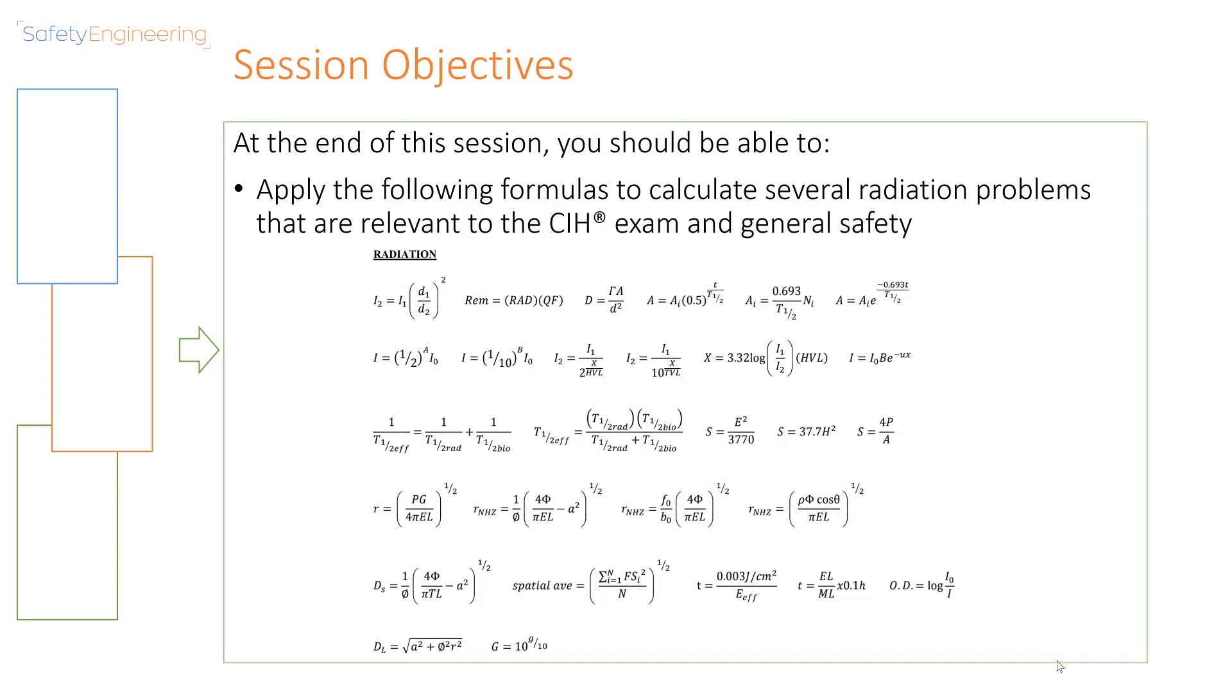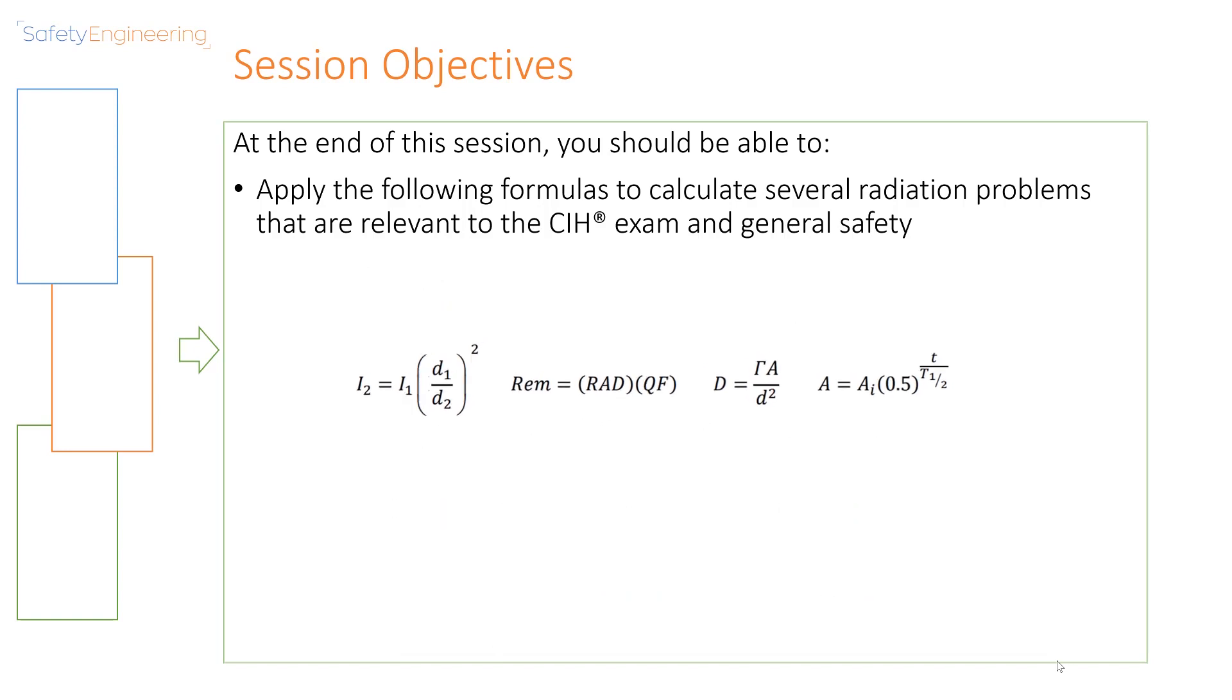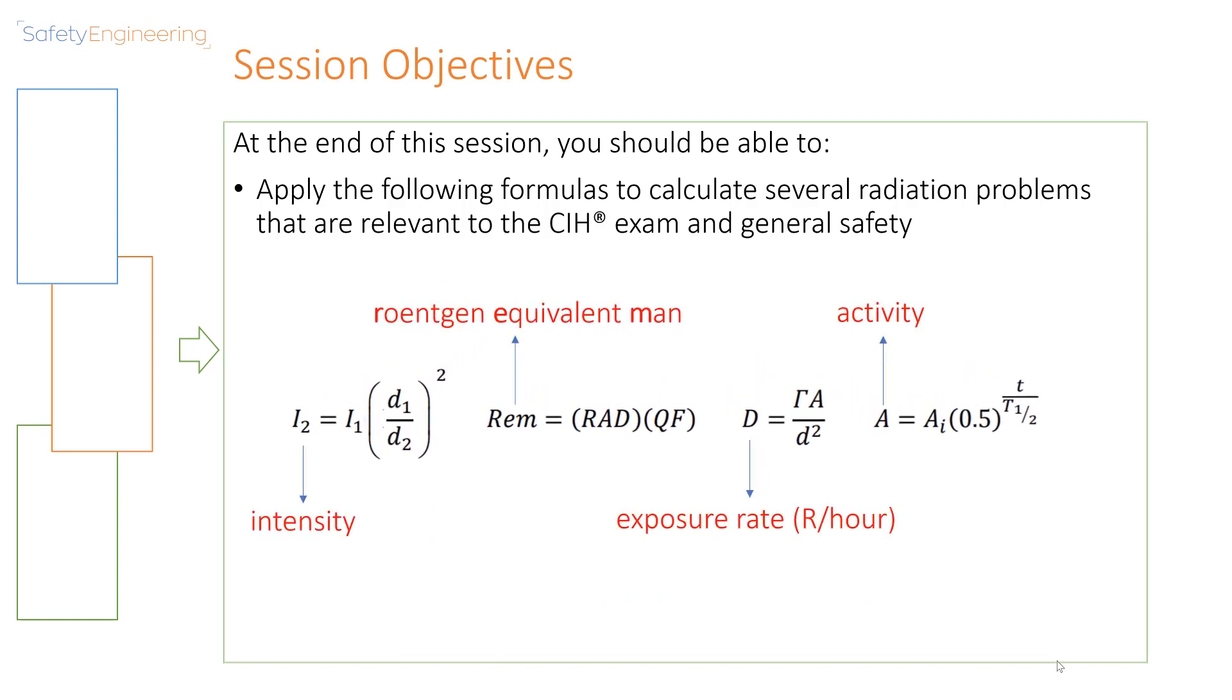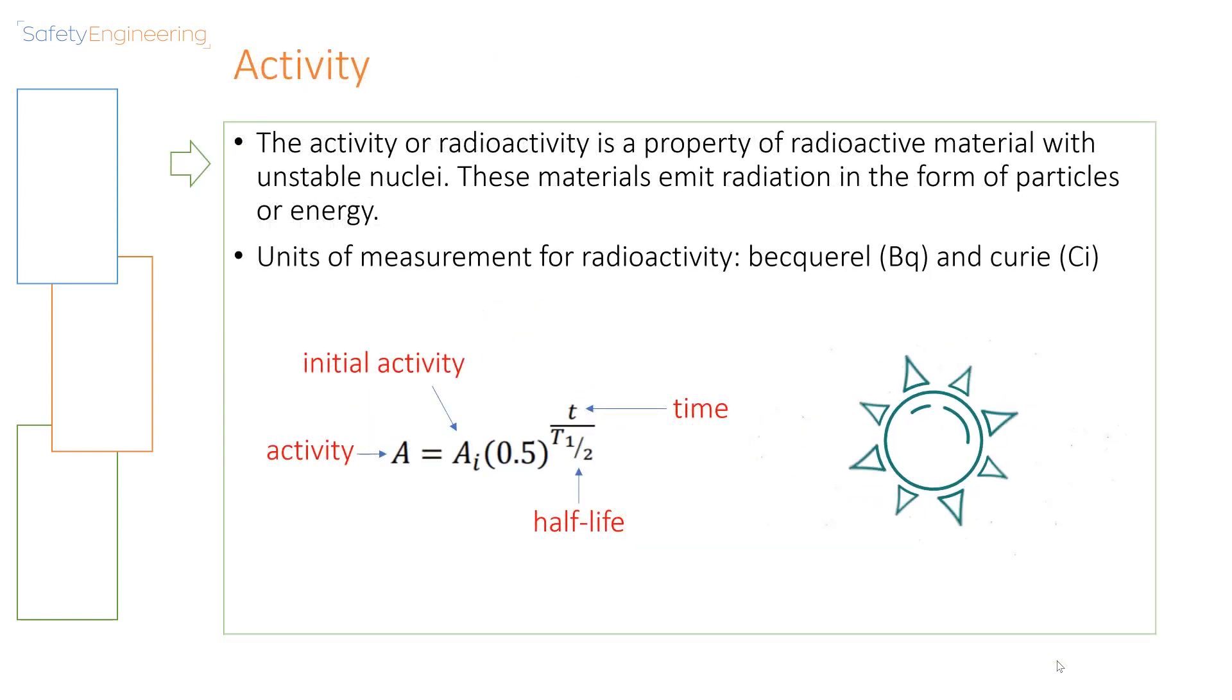We are going to examine the first four equations that you find in the CIH equation sheet. So we are going to examine the intensity equation, the Roentgen equivalent man equation, the exposure rate, and the activity equation.